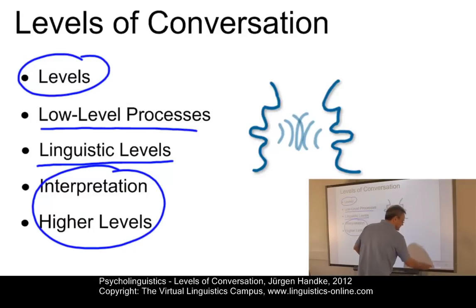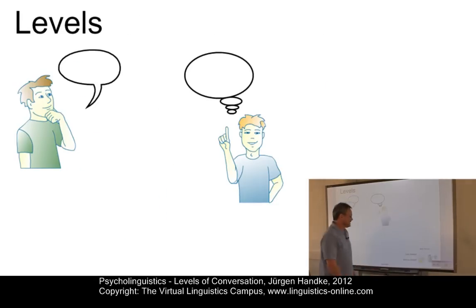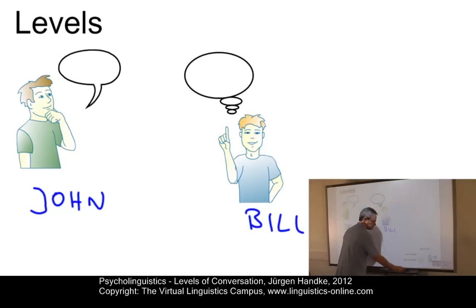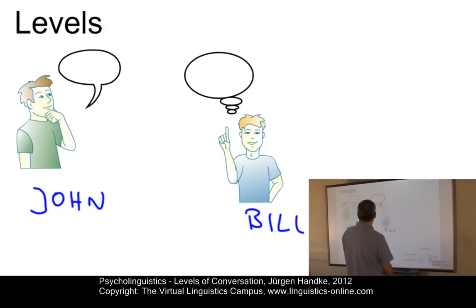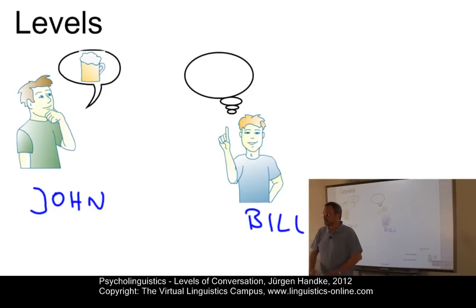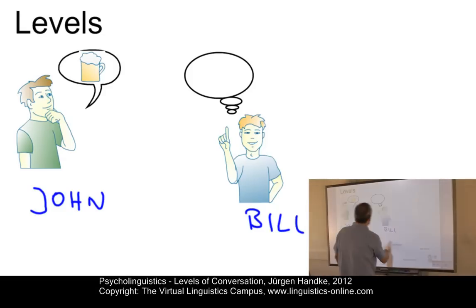Let's first look at the levels in general and illustrate that with an example. Here we have two virtual characters — let's call them John and Bill. Let us assume that John is thirsty and that this feeling dominates his thoughts. He is thirsty and he might want to have a beer. Linguistically, or converted into a linguistic structure, this might come out as: 'I am thirsty.'